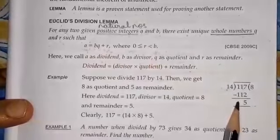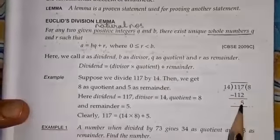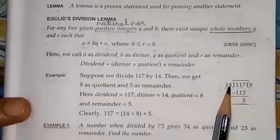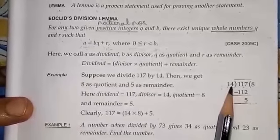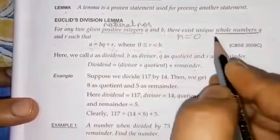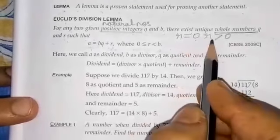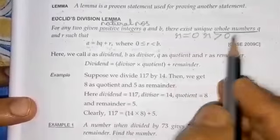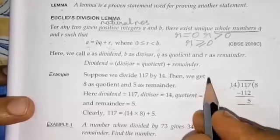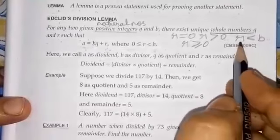Take this example: when we divide 117 by 14, the remainder can be 0 or anything more than 0, but less than 14. The remainder must be less than the divisor. So the remainder is greater than or equal to 0, and the remainder must be less than b, the divisor.